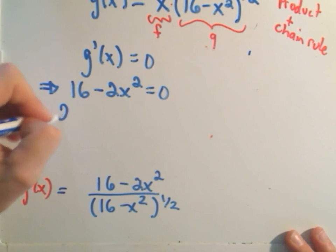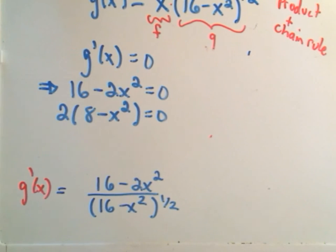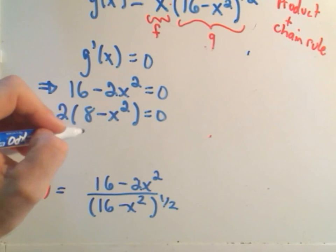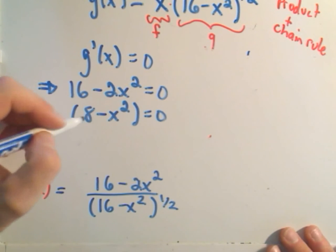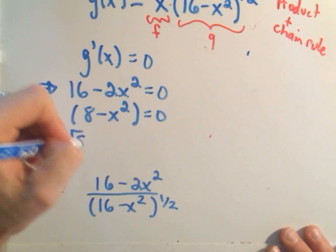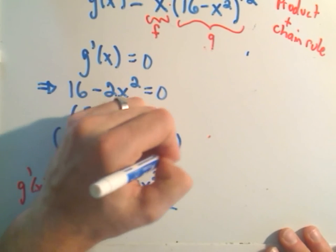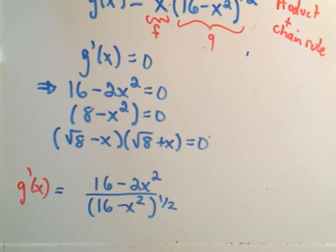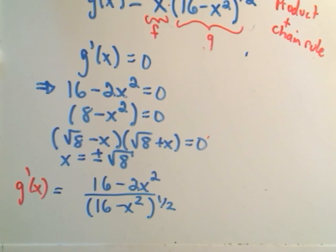Well, we could pull out a 2. And then we would have 8 minus x squared equals 0. And then if I divide by 2, I'll get just 8 minus x squared equals 0. And this will now factor simply as square root of 8 minus x and then square root of 8 plus x. So it's the difference of perfect squares. And that means our potential candidates are x positive and negative square root of 8. So we'll have to check these to make sure they're in the domain of the original function.